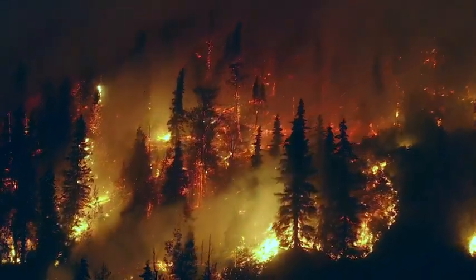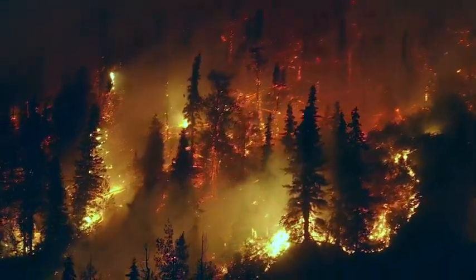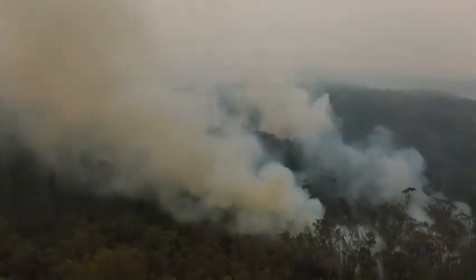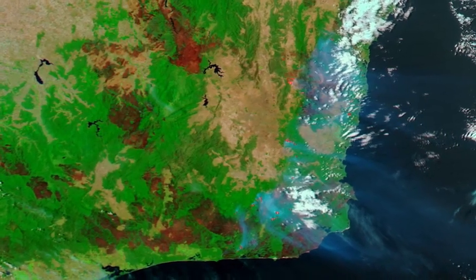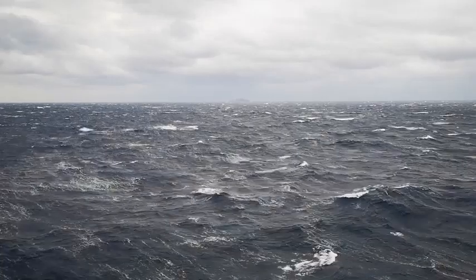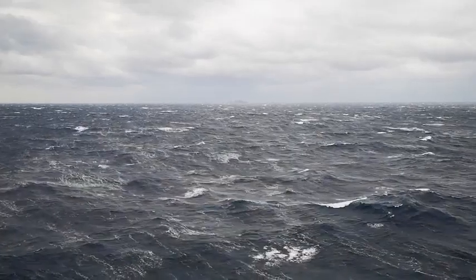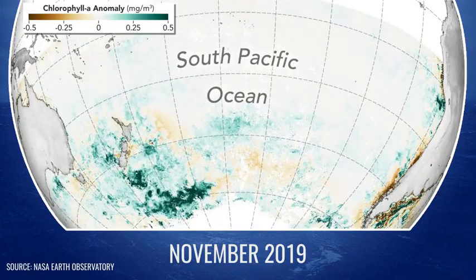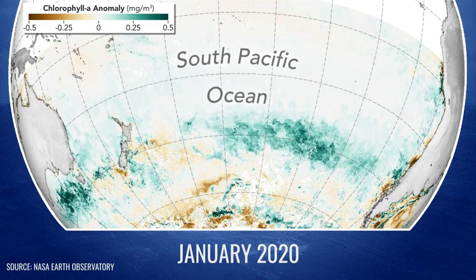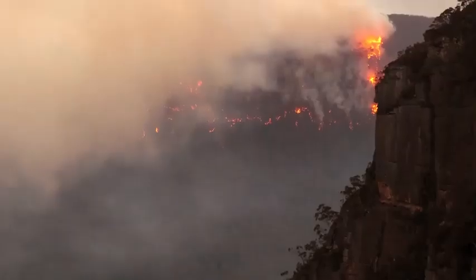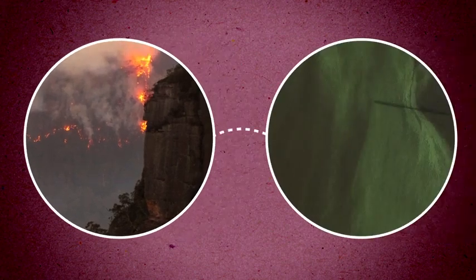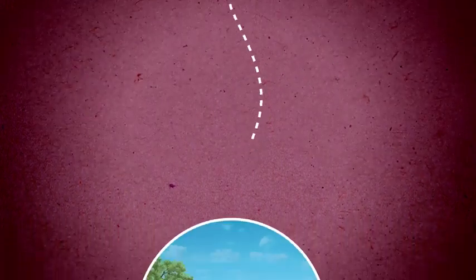Between September 2019 and March 2020, wildfires killed billions of animals and decimated more than 200,000 square kilometers of Australian forest — an area larger than the size of Nebraska. Some thousands of kilometers away in the Southern Ocean, massive algae blooms covered a surface larger than the area of Australia itself. Just how are these wildfires and ocean blooms connected?